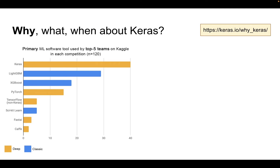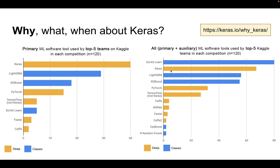Now why are we so interested in learning Keras? If we look at this plot, the Keras usage is much higher — this shows the top five teams on Kaggle, and the plot is from the Keras website. Keras is a user-friendly library: easy to learn, easy to implement, and very powerful. Looking at primary plus auxiliary machine learning software tools used by top five Kaggle teams, Keras is in the top two. We've also covered scikit-learn in great detail in the intermediate series.